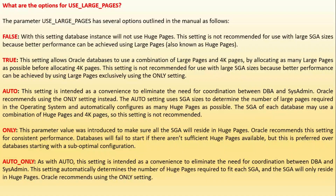The parameter `use_large_pages` has several options. FALSE: the database instance will not use huge pages — not recommended for large SGA sizes because better performance can be achieved using large pages. AUTO: this setting is intended as a convenience, eliminating the need for coordination between the DBA and system admin; it allows Oracle database to use a combination of large pages and 4K pages by allocating as many large pages as possible before allocating 4K pages. This is also not recommended for large SGA sizes because better performance can be achieved by using large pages exclusively.